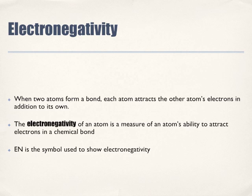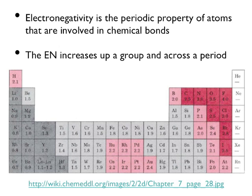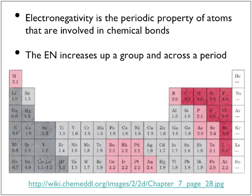We're going to use the symbol EN to show electronegativity. Electronegativity is the periodic property of atoms that are involved in chemical bonds. The electronegativity, as we move up the group and across the period, increases — very similar to what we've seen in terms of electron affinity and atomic size.